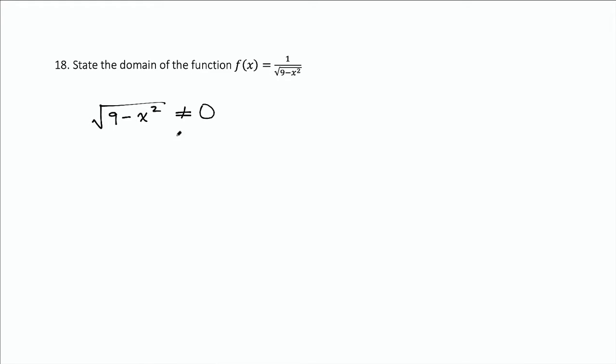So now let's go ahead and square both sides, and we get 9 minus x squared cannot equal 0. Then let's add x squared over. We get 9 not equal to x squared.